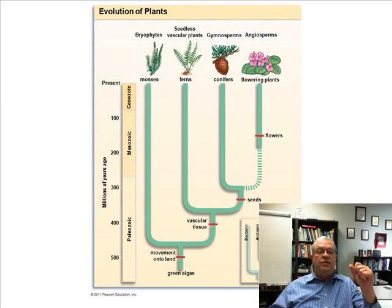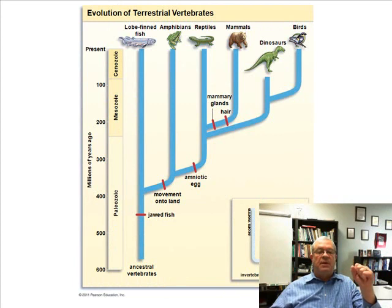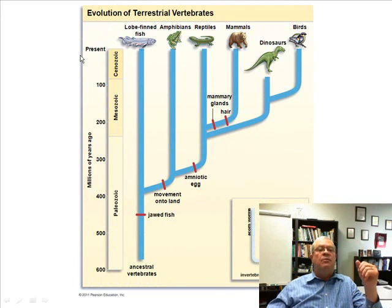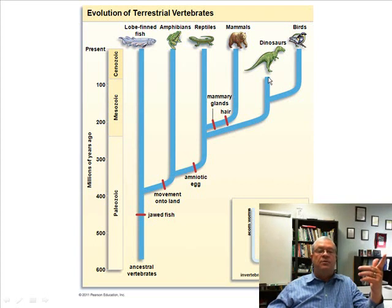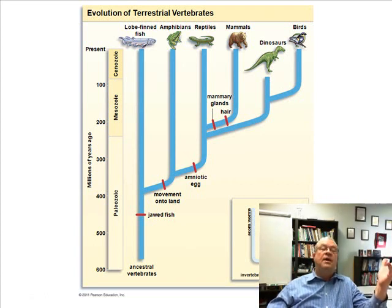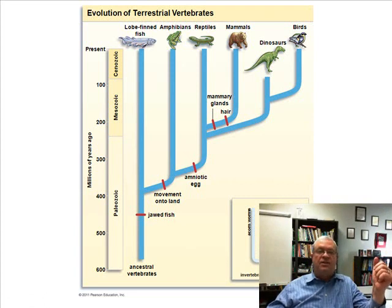Here's an evolution of plants diagram — nothing particularly new. But on the next one, there's something a little bit new: a branch that doesn't make it to the top of the tree. The top of the tree represents the present time, so a branch that doesn't make it to the top represents something that does not exist in the present time — something that has become extinct. Dinosaurs would fit the bill on that.